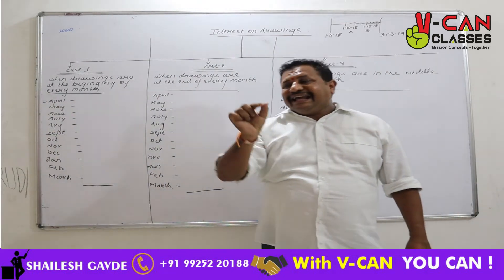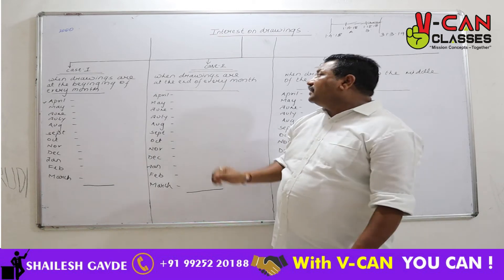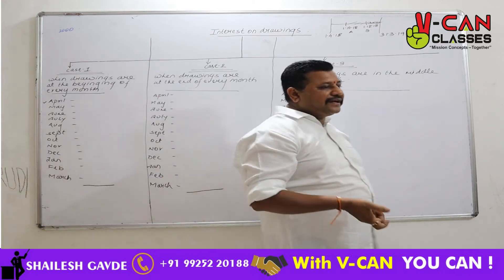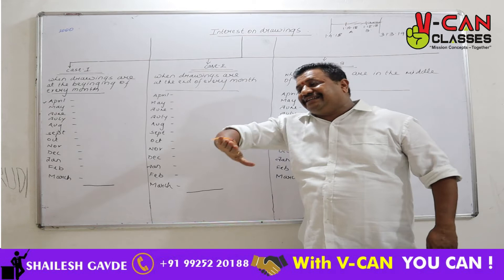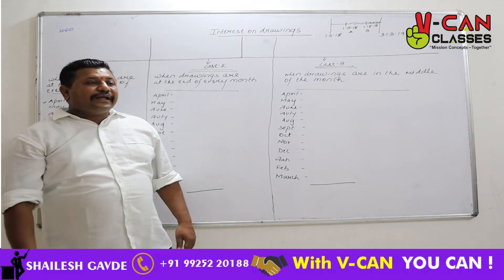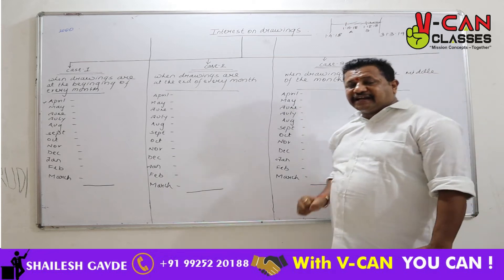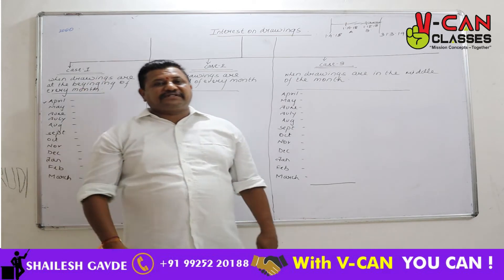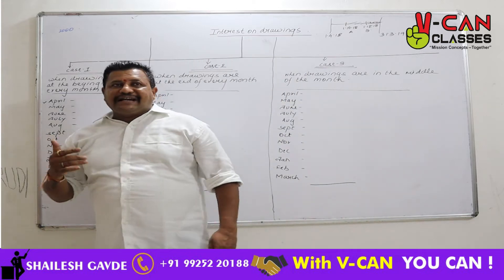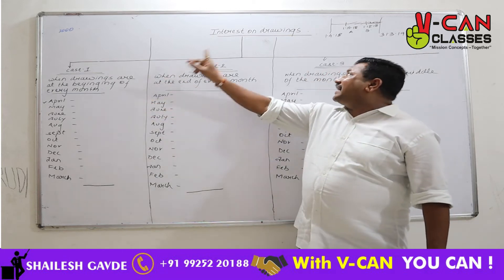The second possibility is when drawings are at the end of every month — Mr. A withdraws at the end of every month. That becomes the second case. The third case is when the partner withdraws a fixed amount in the middle of every month. So these are different combinations possible: a partner withdrawing at the beginning, end, or middle of every month.